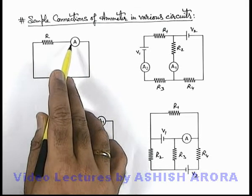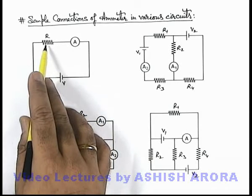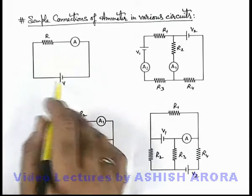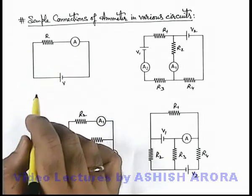And here ammeter resistance, which is the coil resistance of this ammeter, can also be taken in series with the resistance. So effectively, current will be slightly decreased due to introduction of this ammeter over here.